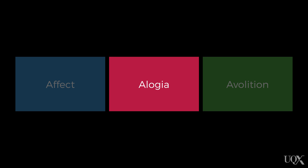Alogia is also known as poverty of speech, and involves a lack of spontaneous speech, which reflects impoverished thought processes.